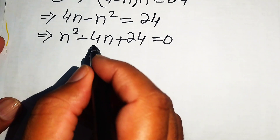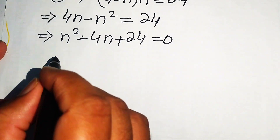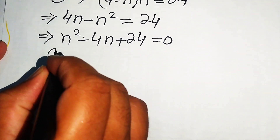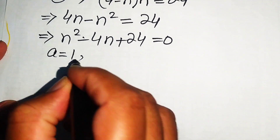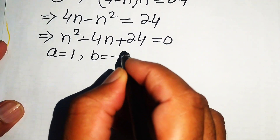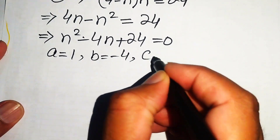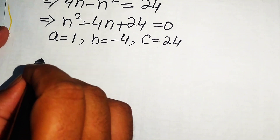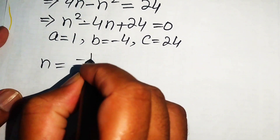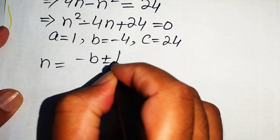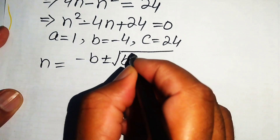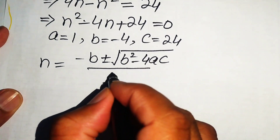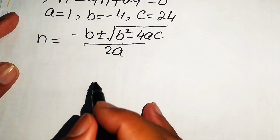We use the quadratic formula to solve. The coefficients are a equals 1, b equals minus 4, and c equals 24. The quadratic formula is n equals minus b plus or minus the square root of b squared minus 4ac, all divided by 2a.